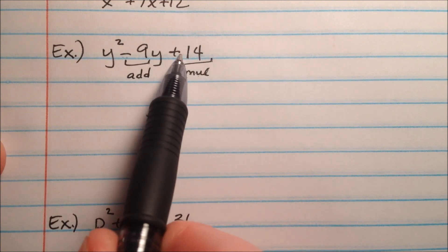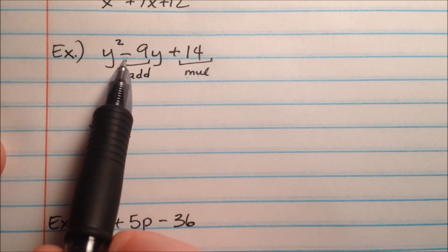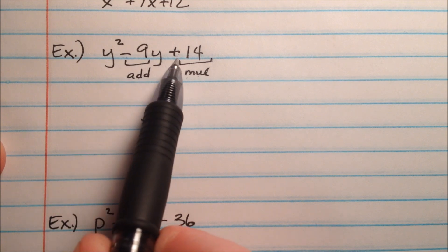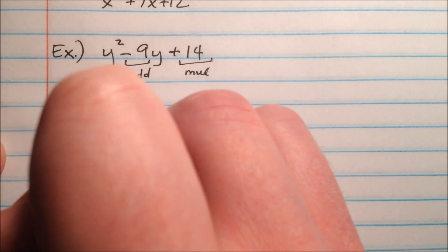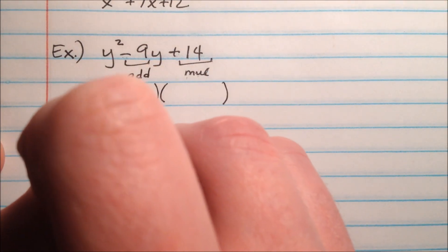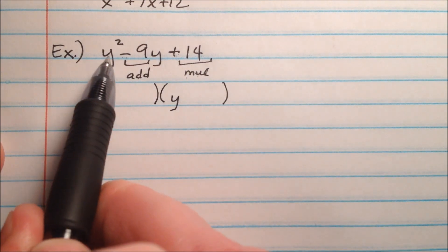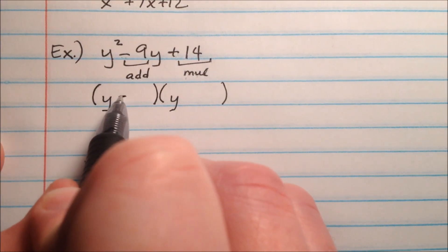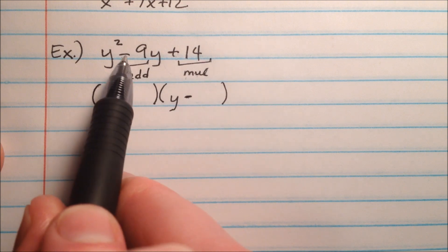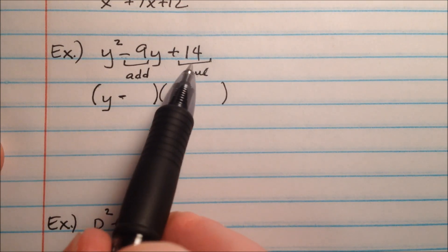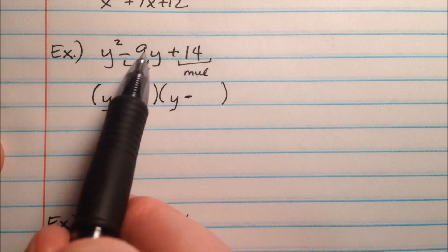Well, in this case, they're going to multiply to make a positive, but add to make a negative. Well, what does that tell us? If two numbers multiply to make a positive, either they both have to be positive or they both have to be negative. And if they add to make a negative, we know they are both negative. So we can kind of jump to this already, and we can put our y's in there, because y is the variable that we're using. And we're going to go ahead and put negative or minus sign for both of those, because we know both of these signs are going to be negative, because when you multiply, it makes positive, and when you add them, it makes a negative.